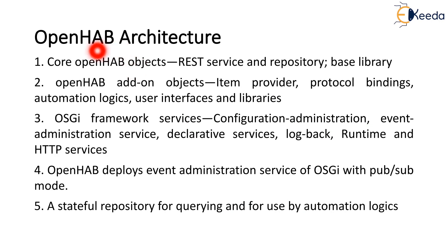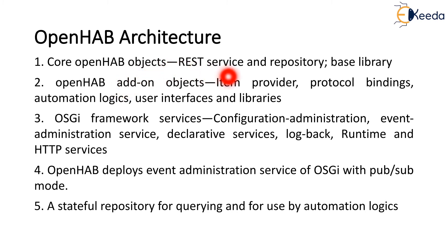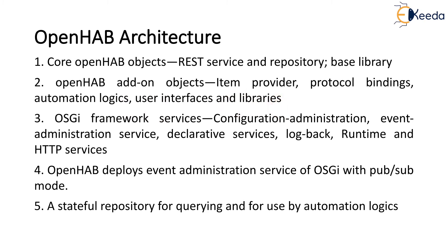This is the OpenHAB architecture. It has two domains and their higher-level service capabilities in the home automation system architecture reference model. Core OpenHAB objects include a REST service and repository with base library. OpenHAB add-on objects include item provider, protocol bindings, automation logistics, user interfaces and libraries.